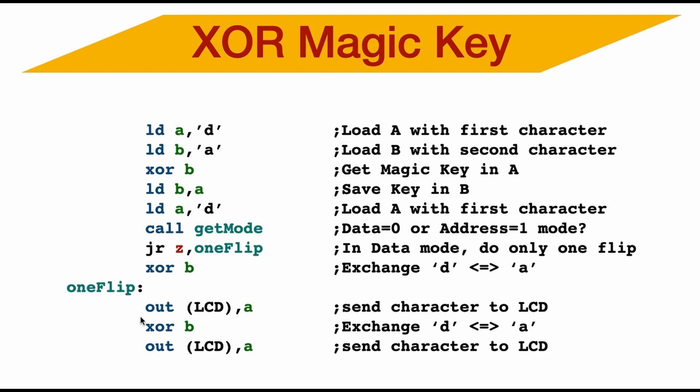And here's the code. I first calculate the magic key by loading A with D and B with A. And then I XOR A and B together to get the magic key. I store that in the register B. And then I just pick the first character. I then call a routine to get the mode. Am I in data or address mode? If it is zero, well, I don't need to flip it because it's already D, data mode.